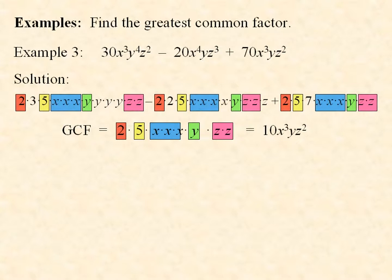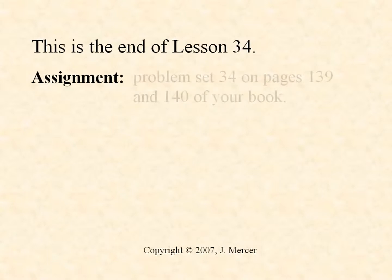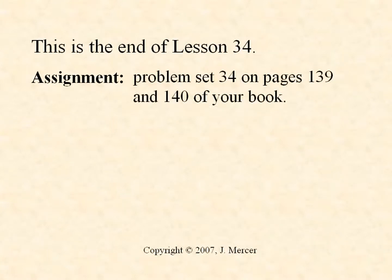So that's how you find a greatest common factor. You don't necessarily have to write each term in its expanded form as long as you think about what the exponents mean. This is the end of Lesson 34. Your assignment is Problem Set 34, on pages 139 and 140 of your book.